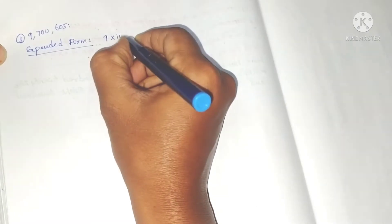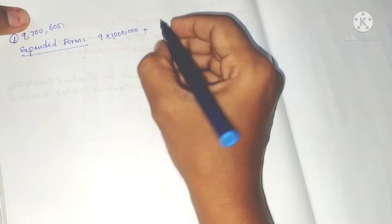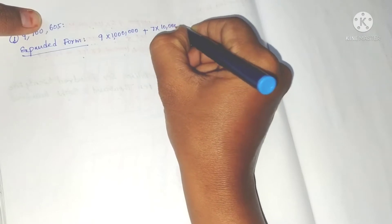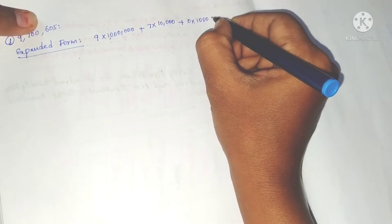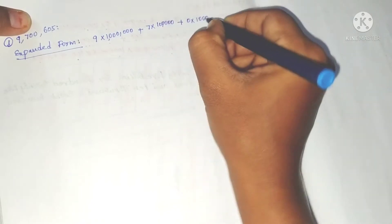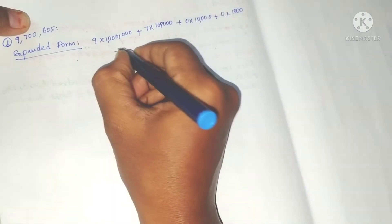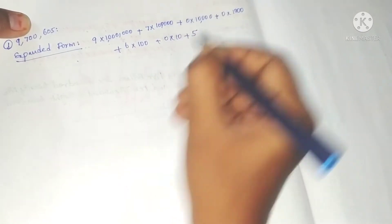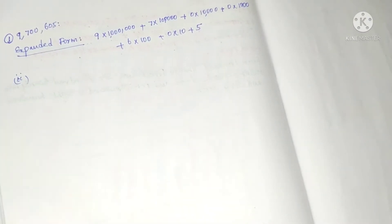So the expanded form is: nine into one million, plus seven into one hundred thousand, plus zero into ten thousand, plus zero into thousand, plus six into hundred, plus zero into ten, plus five. This is the expanded form.